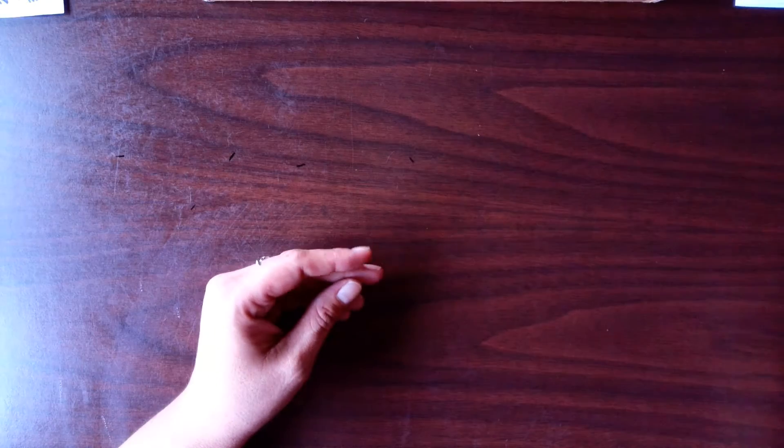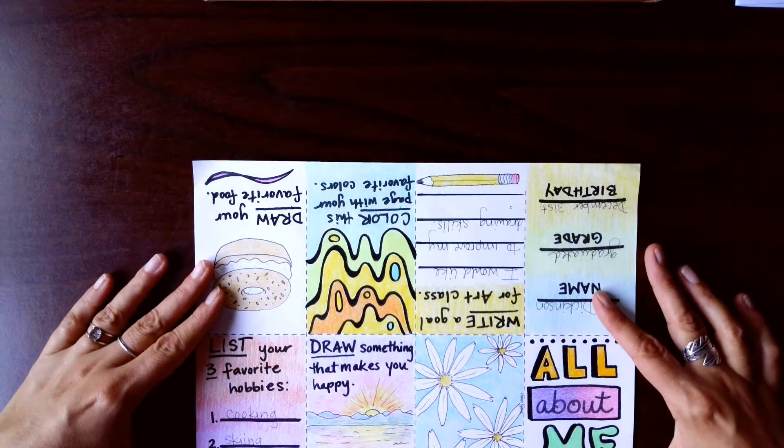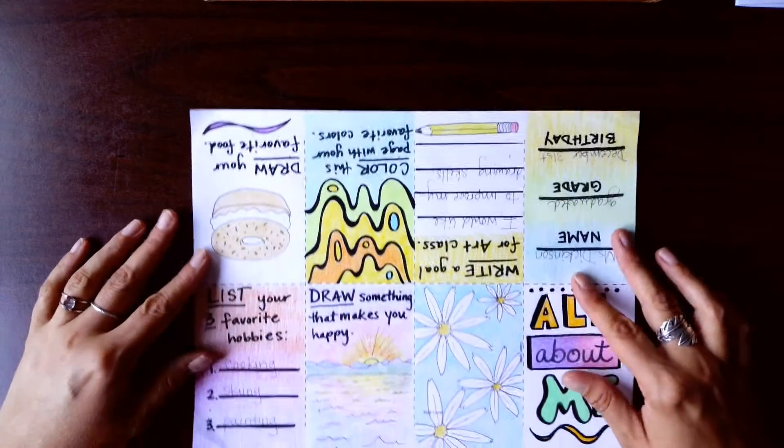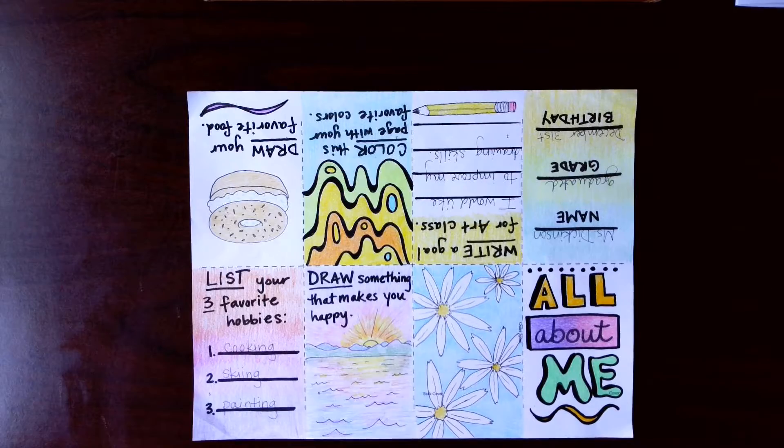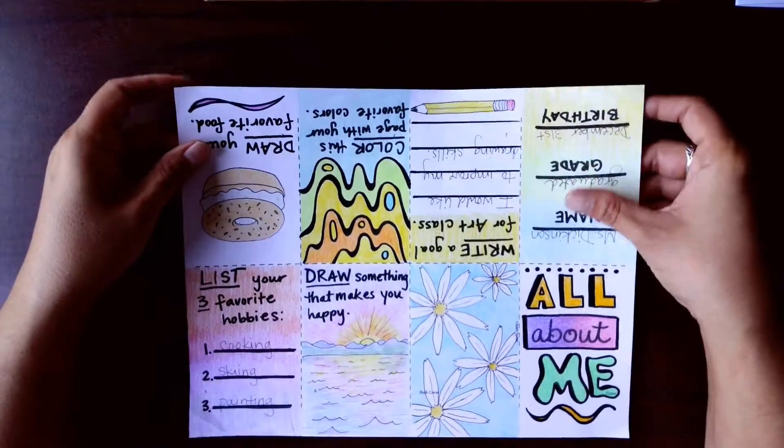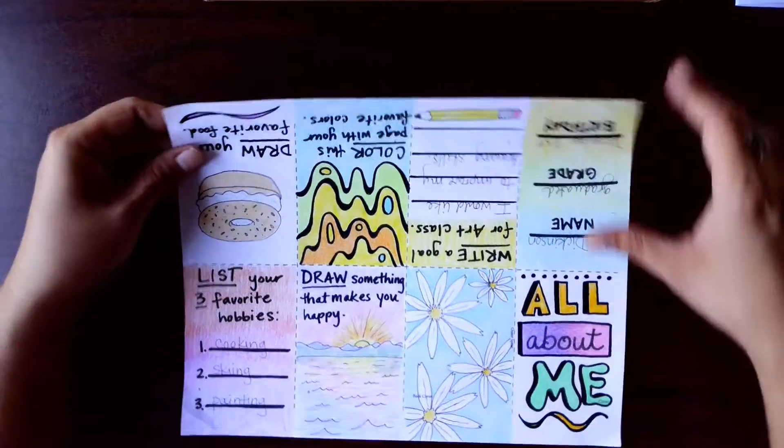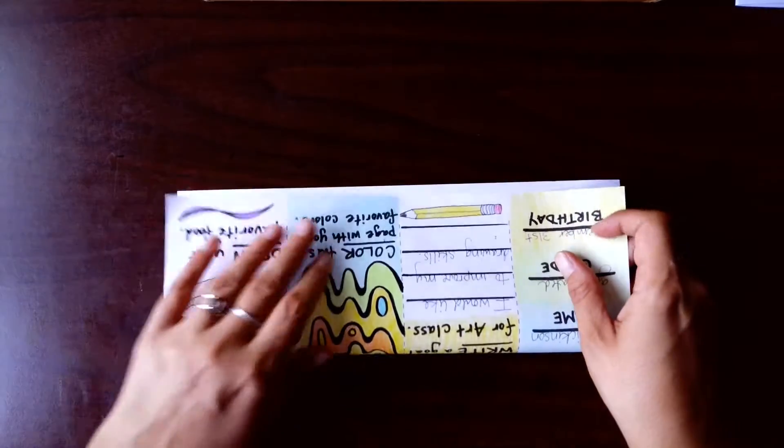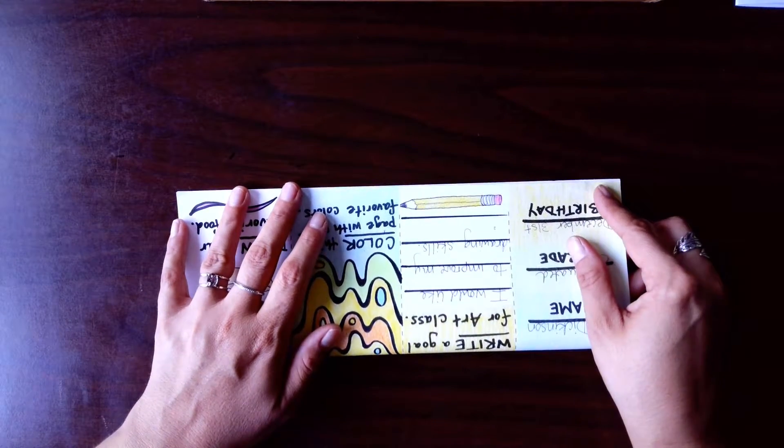In order to make our worksheets into a zine, we're going to start by folding our paper in half. We're going to first fold in half lengthwise, so I'm going to just carefully line up the corners best I can.